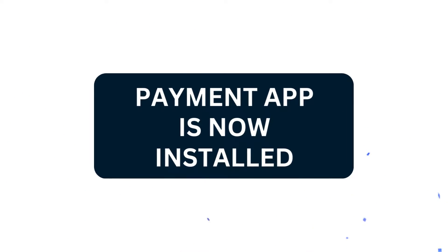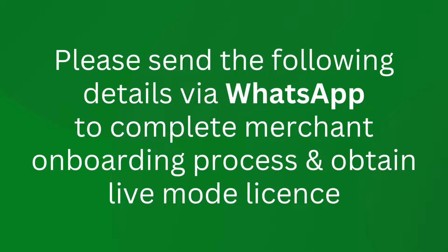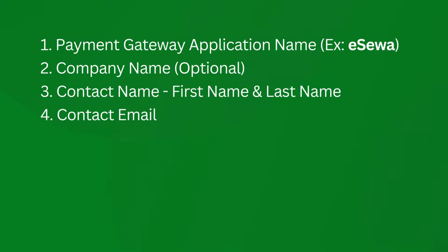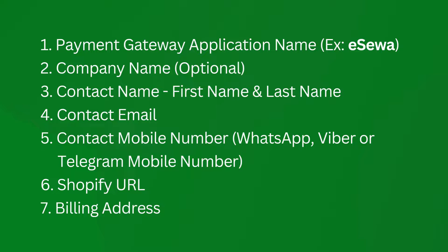Your payment app is installed. Please send the following details via WhatsApp to complete the merchant onboarding process and obtain a live mode license: 1. Payment gateway application name (example: e-sore). 2. Company name (optional). 3. Contact name (first name and last name). 4. Contact email. 5. Contact mobile number (WhatsApp, Viber, or Telegram mobile number). 6. Shopify URL.